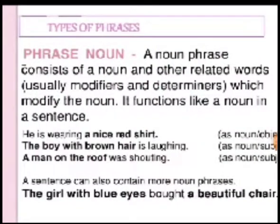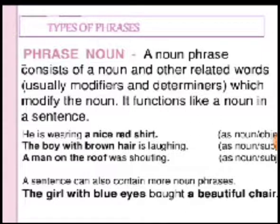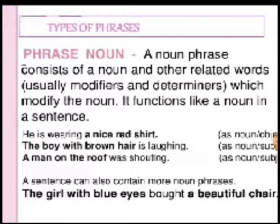The first type is the noun phrase, or phrasal noun. A noun phrase consists of a noun and other related words — usually modifiers and determiners — which modify the noun. It functions like a noun in a sentence. For example, 'he is wearing a nice red shirt' — here it acts as a noun or object. In 'the boy with brown hair is laughing,' it also acts as a noun but additionally performs the duty of a subject.